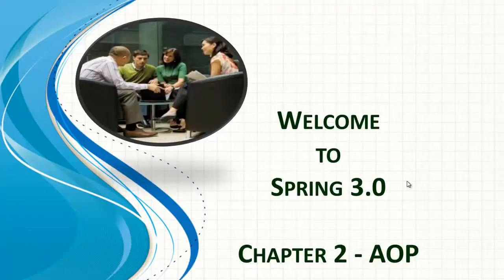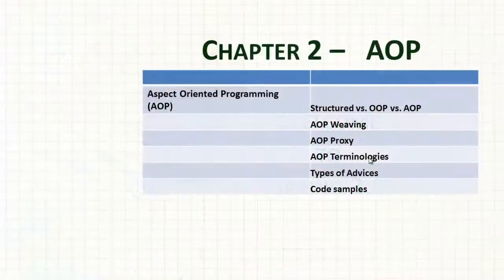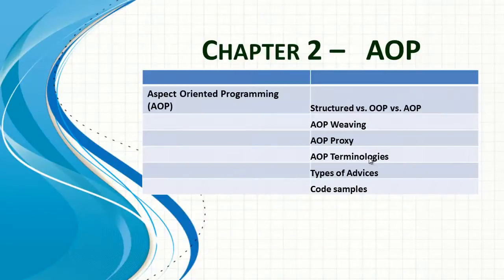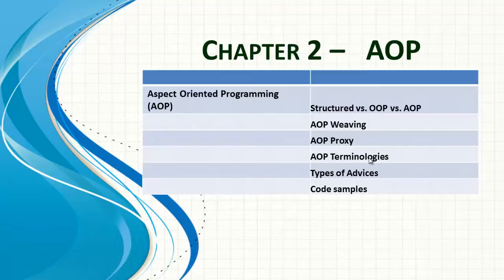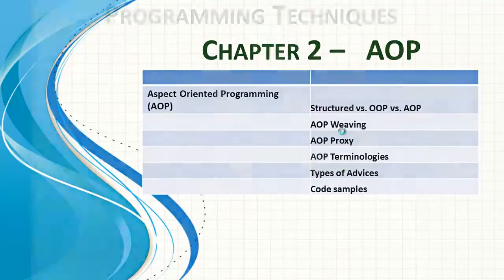Hello and welcome to Spring 3.0 training. This is Chapter 2: Aspect Oriented Programming. Let's quickly run through the content of this chapter. We'll understand what aspect oriented programming is, look at AOP weaving, examples associated with it, how AOP proxying works, AOP terminologies like join point, point cut, and advice, the types of advices, and finally some code samples.